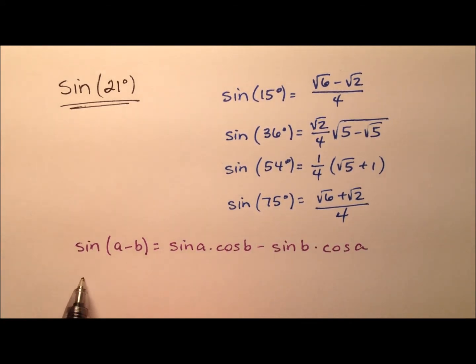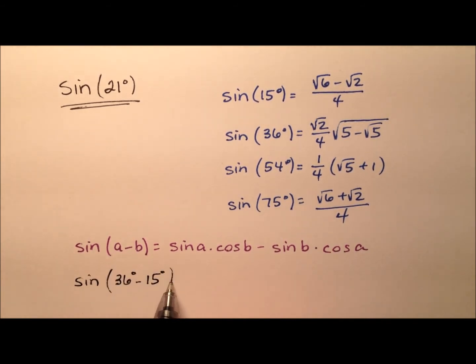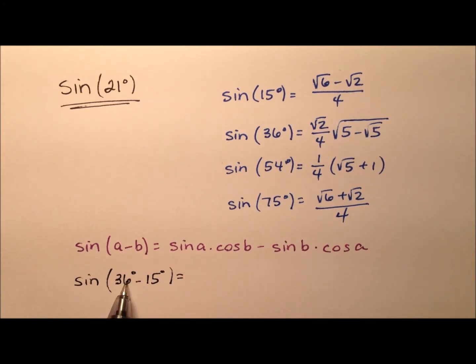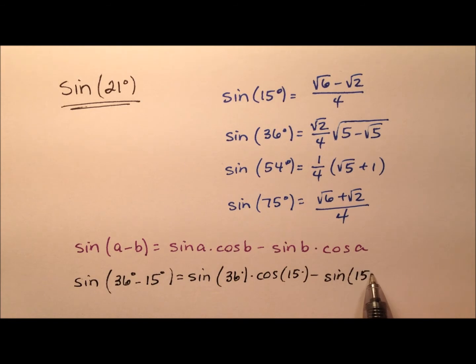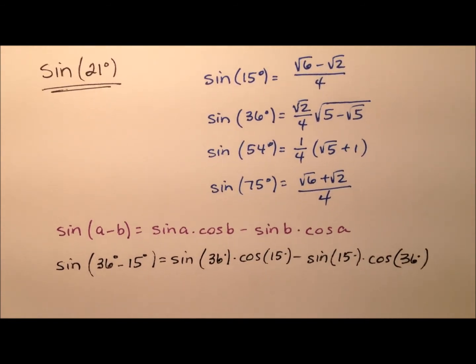So let's go ahead and use this difference formula. We're going to use the sine of 36 degrees minus 15 degrees, and of course 36 minus 15 is going to be my 21 degrees. So that expansion is going to be the sine of 36 degrees times the cosine of 15 degrees minus the sine of 15 degrees times the cosine of 36 degrees.